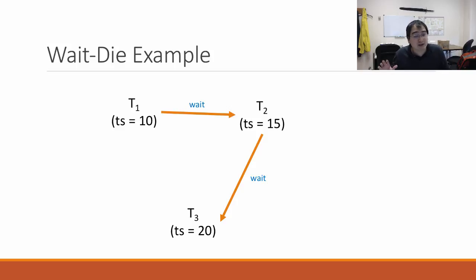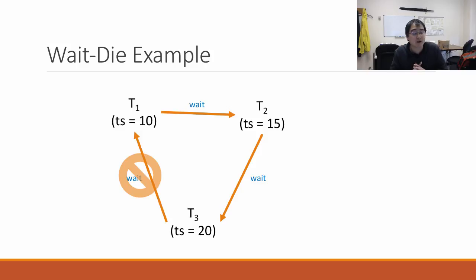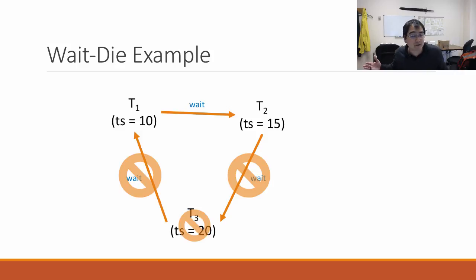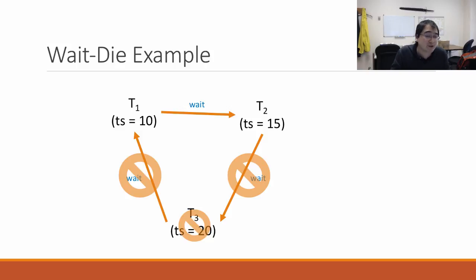Transaction 3 needs a lock held by transaction 1. Is transaction 3 older or younger? Transaction 3 is younger than transaction 1, so instead of waiting, it should die — it is rolled back. Now that transaction 3 has died and gave up all its locks, transaction 2 no longer needs to wait and can proceed. Then transaction 2 finishes, and then transaction 1 finishes. Even though we would have had a deadlock cycle among T1, T2, and T3, wait-die prevented the cycle from proceeding.